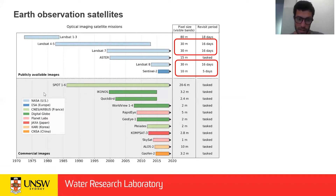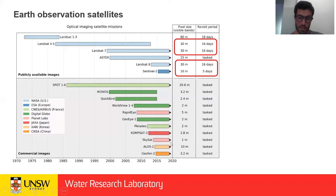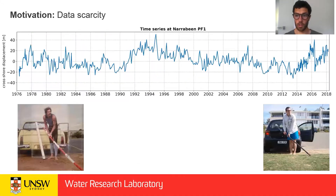The rest of the satellites listed here are commercial. You can see that the resolution is much higher — for example, one meter per pixel for the Skysat Planet Labs constellation. The main motivation for this work is data scarcity.